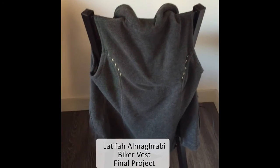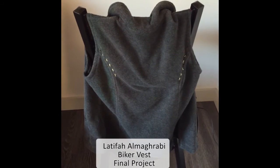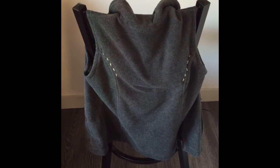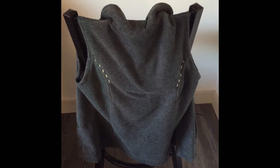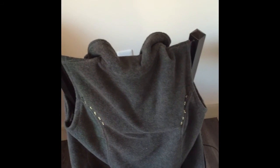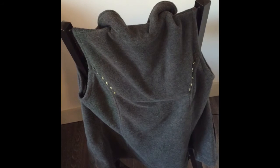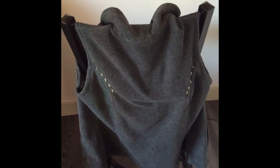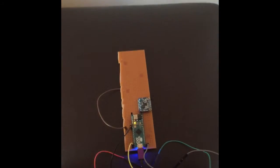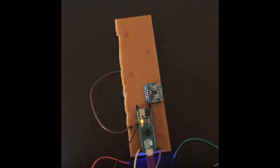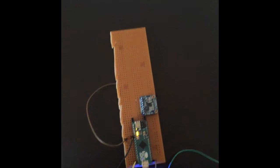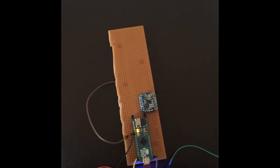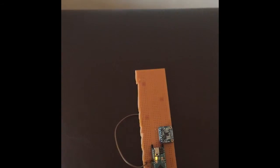Hello, my name is Latifa Al-Maghurbi. This is my final project for ECE2881. It's a vest for bikers. It has two sets of LEDs, right and left. Each set would turn on based on the turn detected. The turn is detected using a magnetometer or an electronic compass that you see here. There is an Arduino micro that I use as a microcontroller to control the whole system.